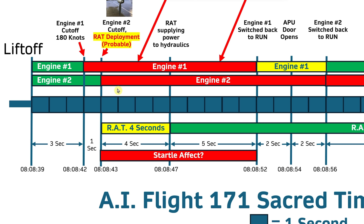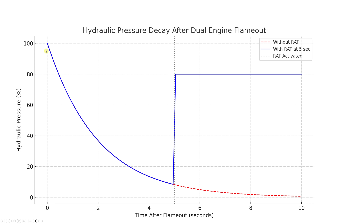If the RAT deploys and starts kicking in after a few seconds, it starts supplying power. Even if the eight-second figure some people cite is correct — though that may be from other planes — if engine two turns off and about a second later the RAT starts to kick in, hydraulics are still at around 80%. This pictorial graph illustrates why it was able to get everything back up and running so quickly: it didn't drop that quickly to begin with.